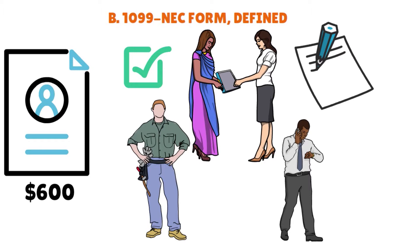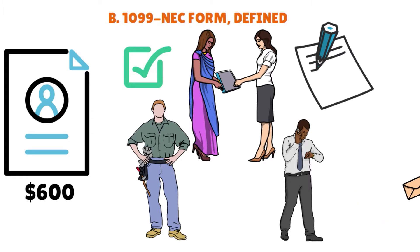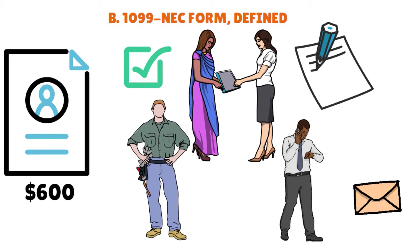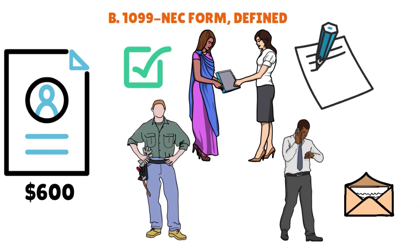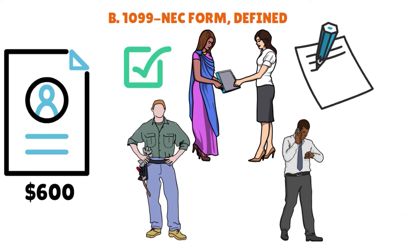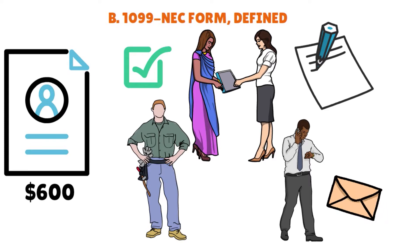This form should be filed with the IRS on paper or electronically and sent to recipients by February 1st, 2021. Non-employee compensation may be subject to backup withholding if a payee has not provided a taxpayer identification number to the payer, or if the IRS notifies the payer that the taxpayer identification number provided was incorrect. You always want to double check that taxpayer identification number.